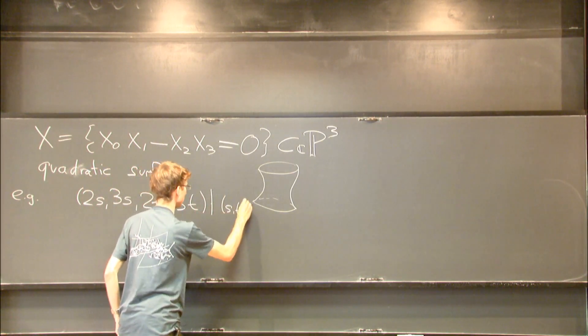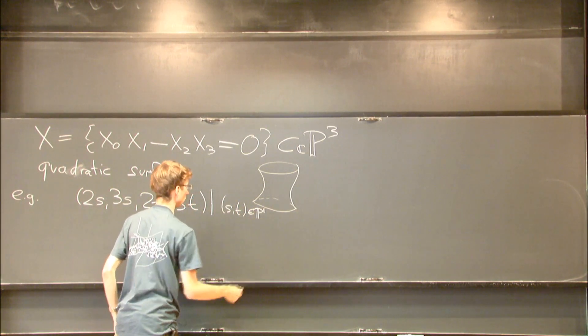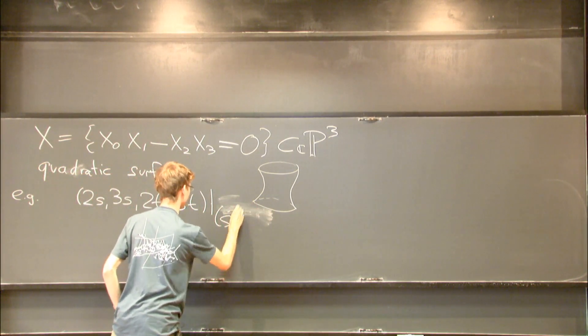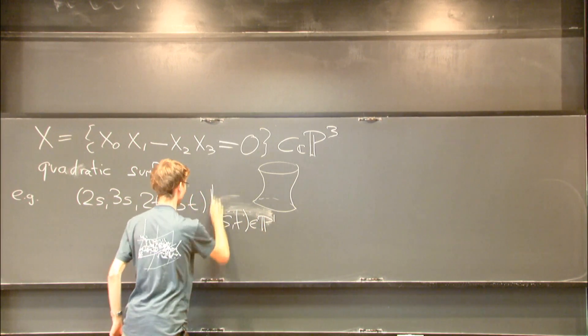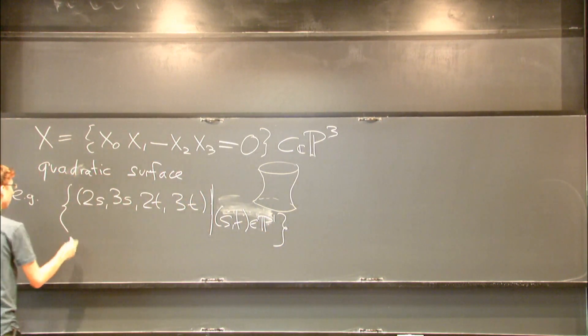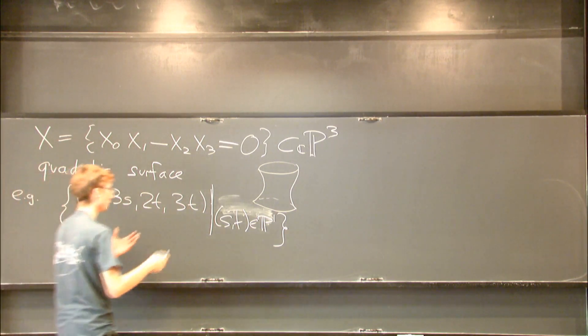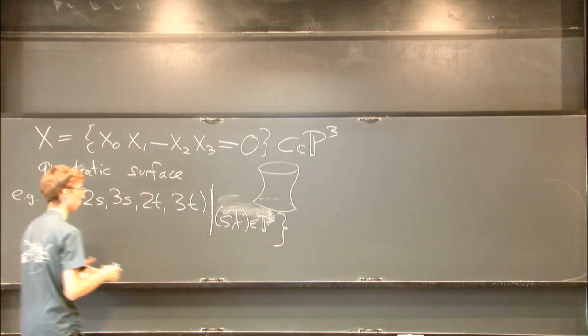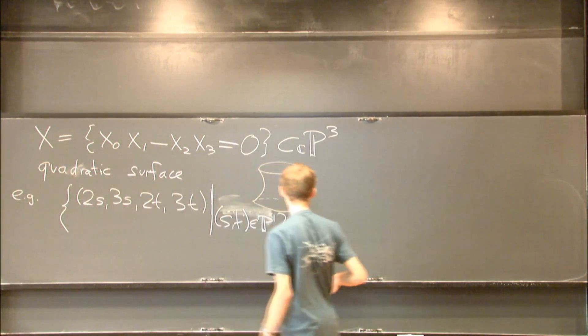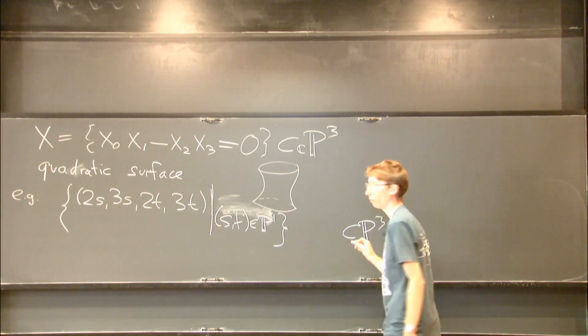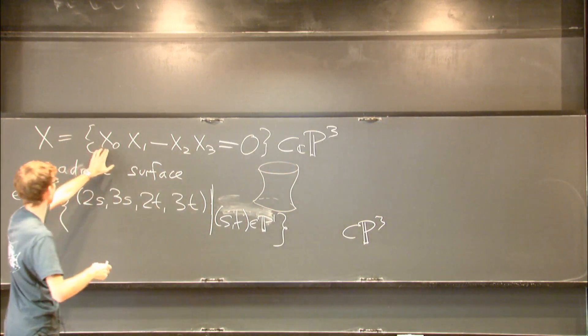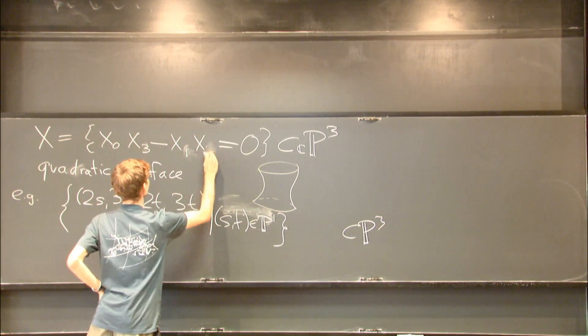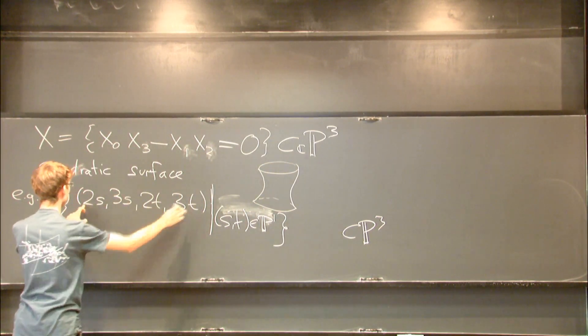Where s, t are parameters from the complex projective line. This is a curve, because it's parametrized by a projective line and has four coordinates, so it defines something in P3. Now you can check that if you multiply x0 times x3, you get 6st.